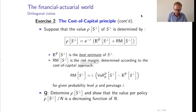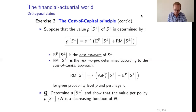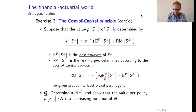The risk margin is i times the difference, where i is a percentage between zero and one — for instance i equals 0.10, meaning 10%. The difference is the value at risk at level P of S-orthogonal minus the expectation under P of S-orthogonal, where P is for instance 99.5%. So we want to be 99.5% sure to be able to pay, for a given probability level and percentage i.